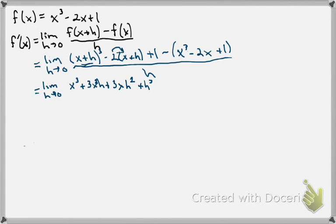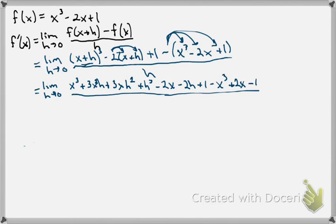Now we've got to distribute this 2. Minus 2x minus 2h and then we still have this plus 1. Now for this minus f of x part, we have to distribute the negative. So minus x cubed plus 2x minus 1. Once again, we are still all over h.